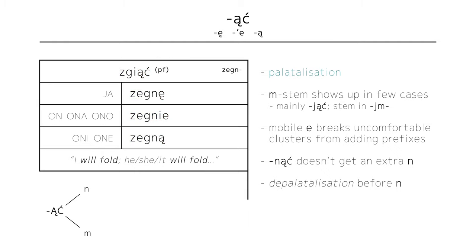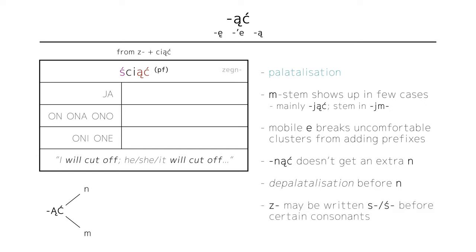A more extreme example would be ściąć, to cut off. It's not that evident, but it's actually ciąć, to cut, from earlier, prefixed with z. It's only written ś to reflect pronunciation, but with the mobile e, the z comes back to its original pronunciation. Zetnę, I will cut off, zetnie, he, she, it will cut off, and zetną, they will cut off. As opposed to stnę, or stnie, I have no idea.